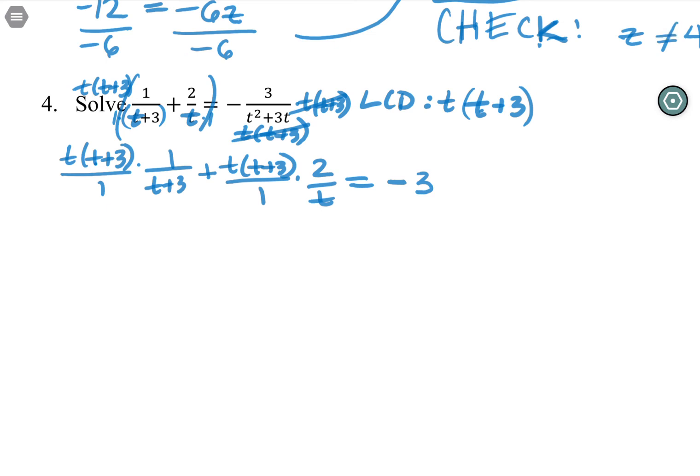So going a little further with the left, cancel the t plus threes out of that one. But you'll be left with t times one, so t. The next fraction you can cancel t's out of. So you're left with two times t plus three, which is a two t plus six.